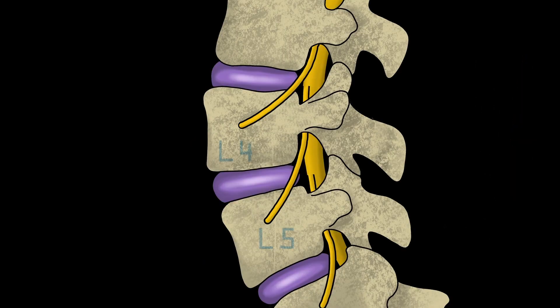Here's a diagram of a normal lumbar spine — the lower back. You can see that the bones or vertebrae are lined up perfectly over each other. When I draw a straight line at the back of the L4 vertebrae, it matches up very nicely with another line drawn at the back of the L5 vertebrae, like this.